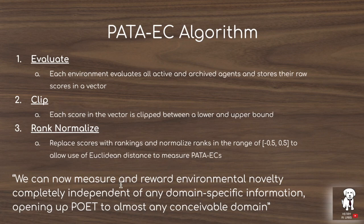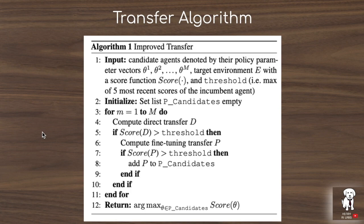This allows us to measure and reward environmental novelty completely independent of any domain-specific information, opening POET to almost any conceivable domain. For the transfer algorithm: when you first take an agent into a new environment, you compute a direct transfer — just drop the agent in and get its score. If that score exceeds a threshold, you do fine-tuning of the theta weights. If it then exceeds the threshold after fine-tuning, it's added to the candidate set.